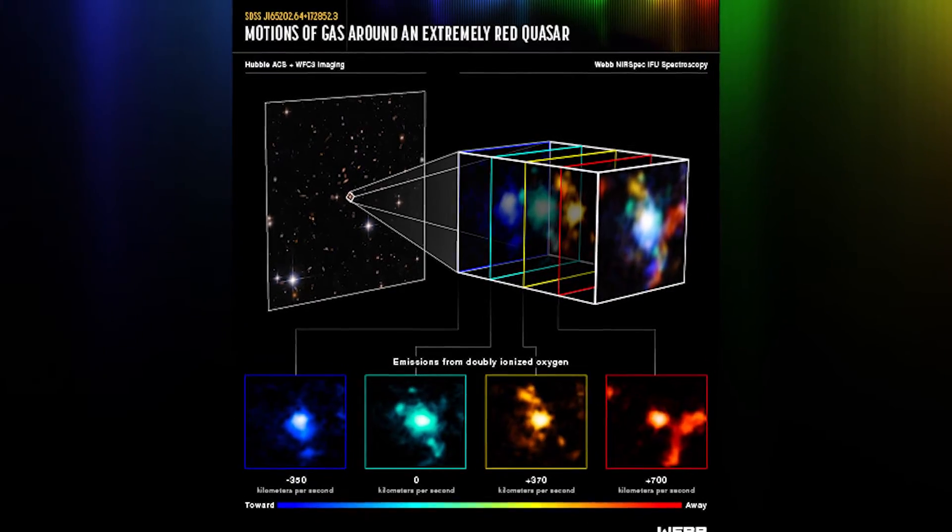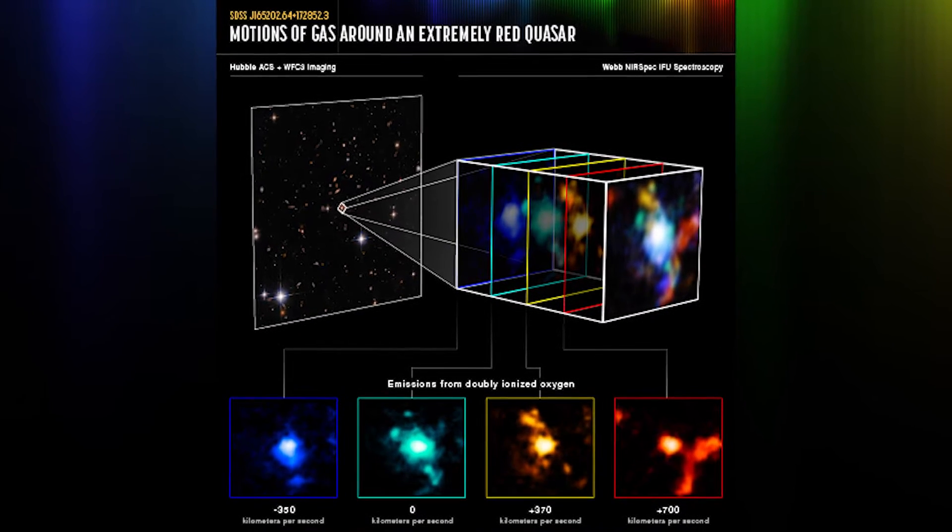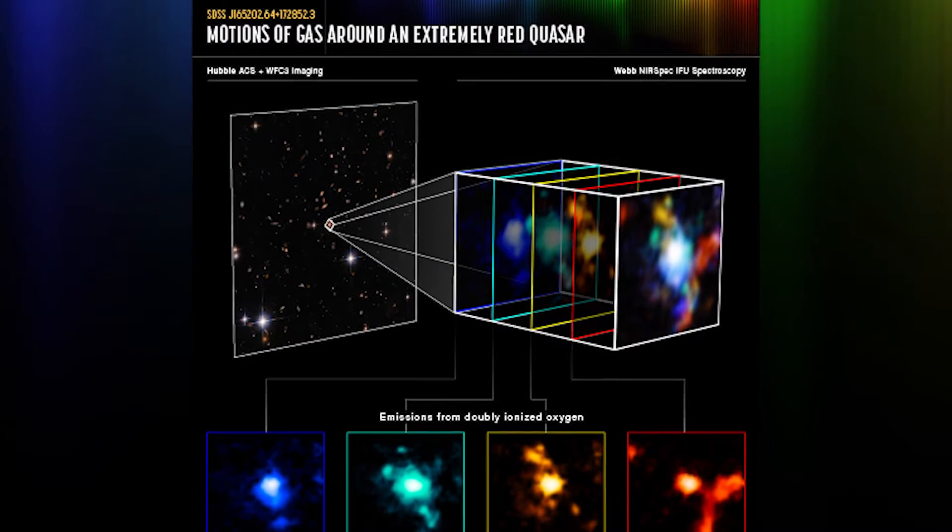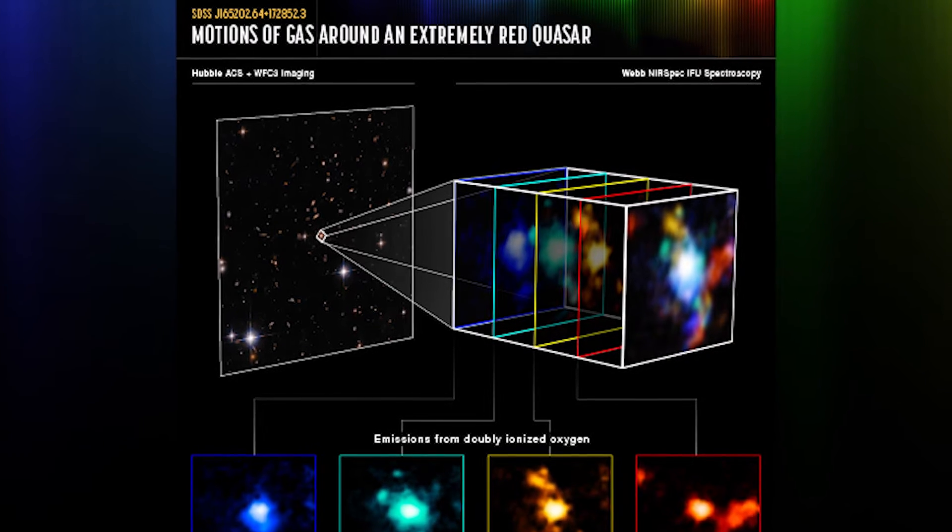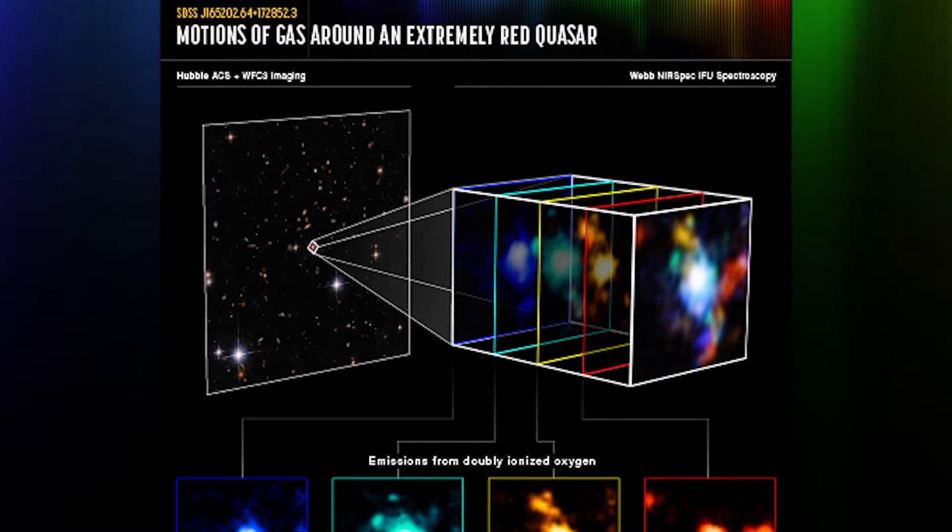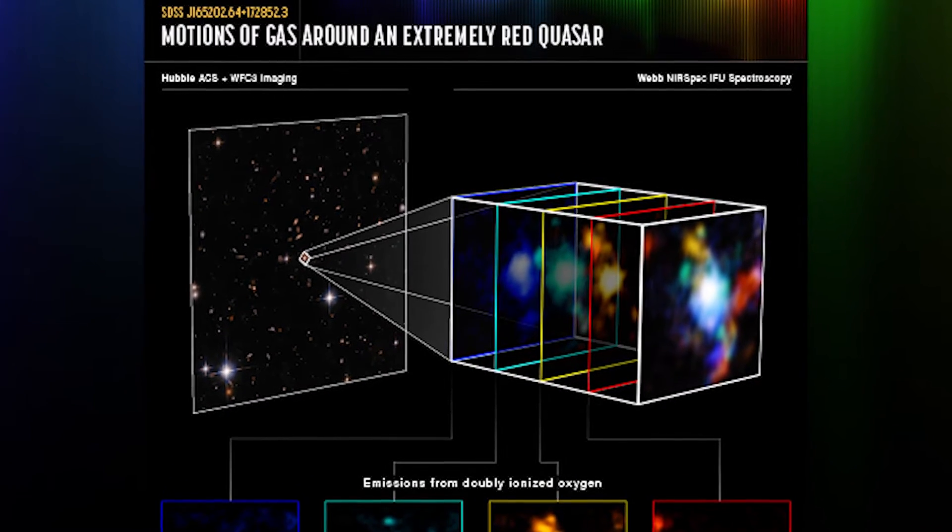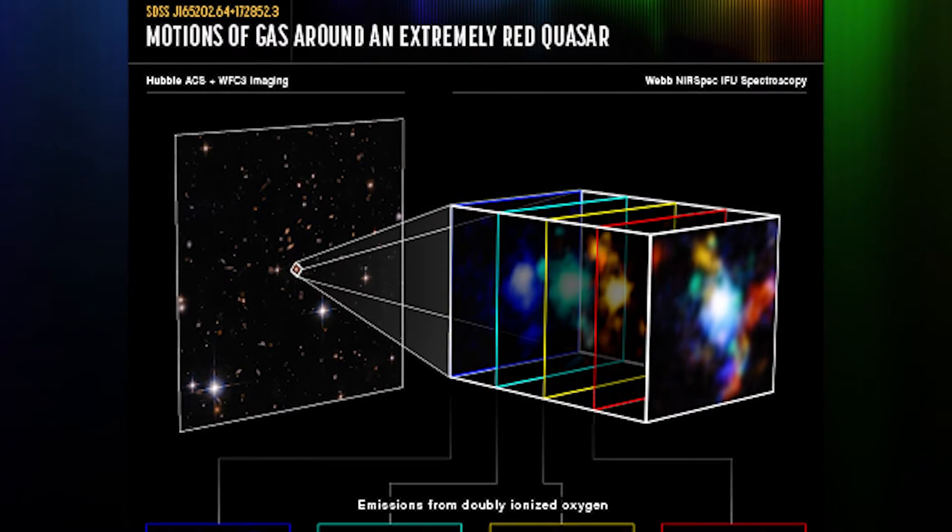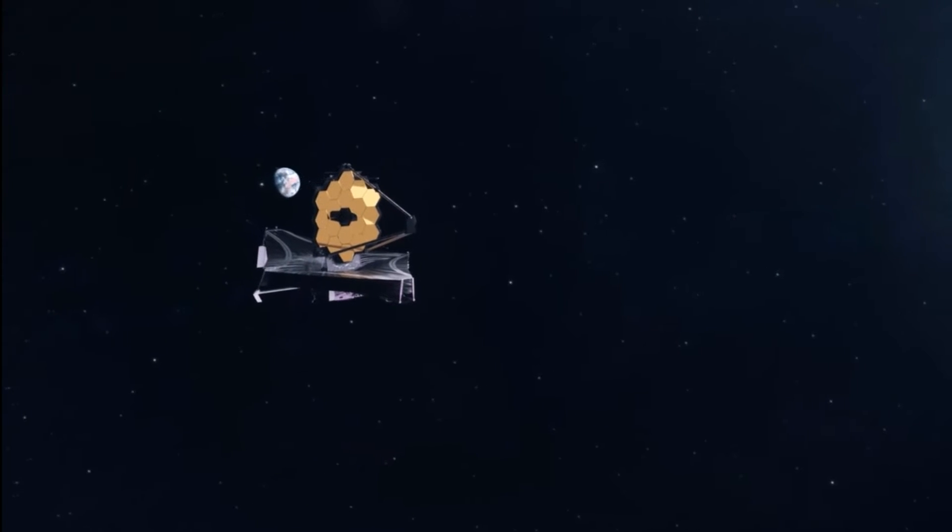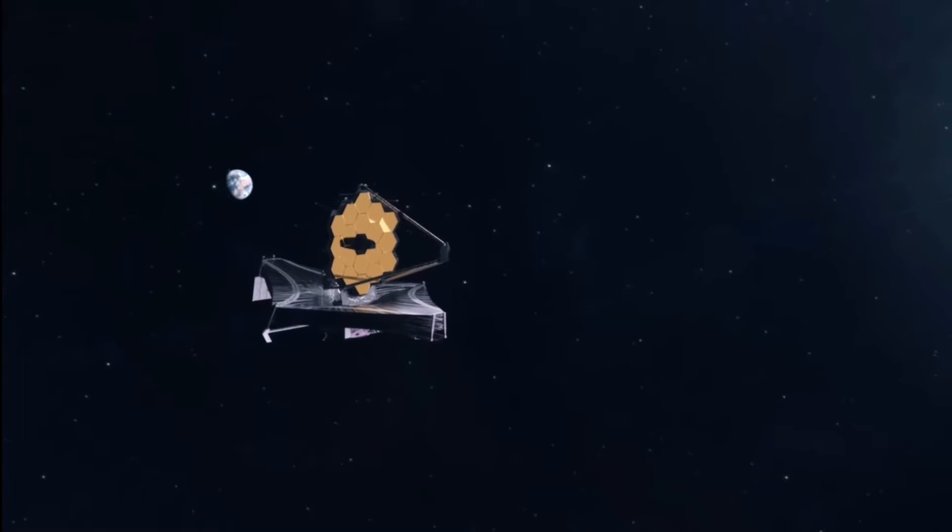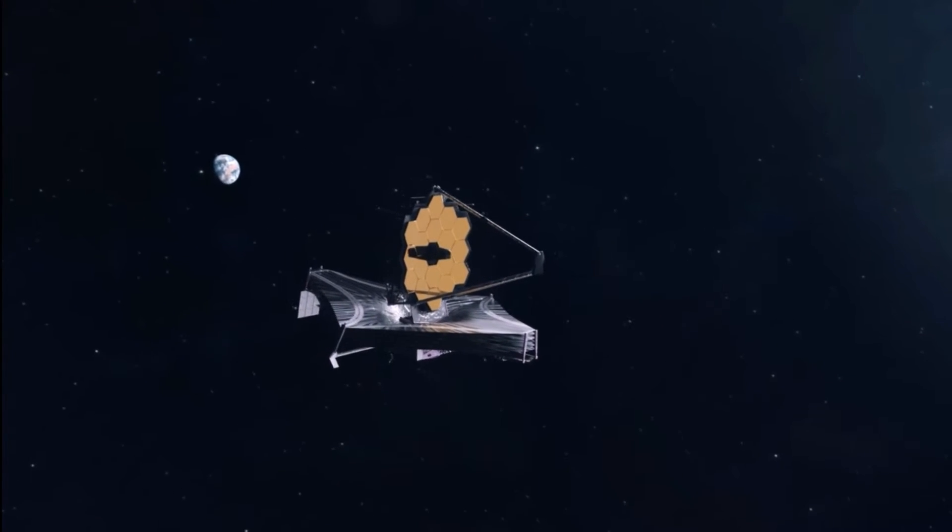Webb discovered SDSS J165202.64-172852.3, a quasar that was active 11.5 billion years ago. The light from this distant galaxy has been redshifted, making it seem much redder than it really is. This makes Webb, with its exceptional sensitivity at infrared wavelengths, an ideal instrument for a comprehensive study of the galaxy.